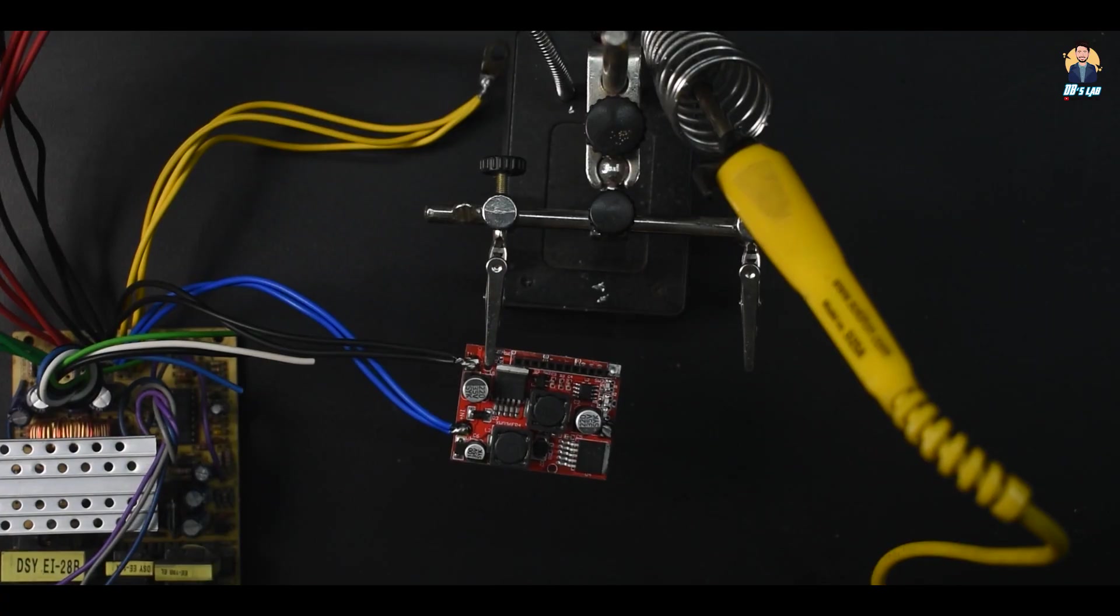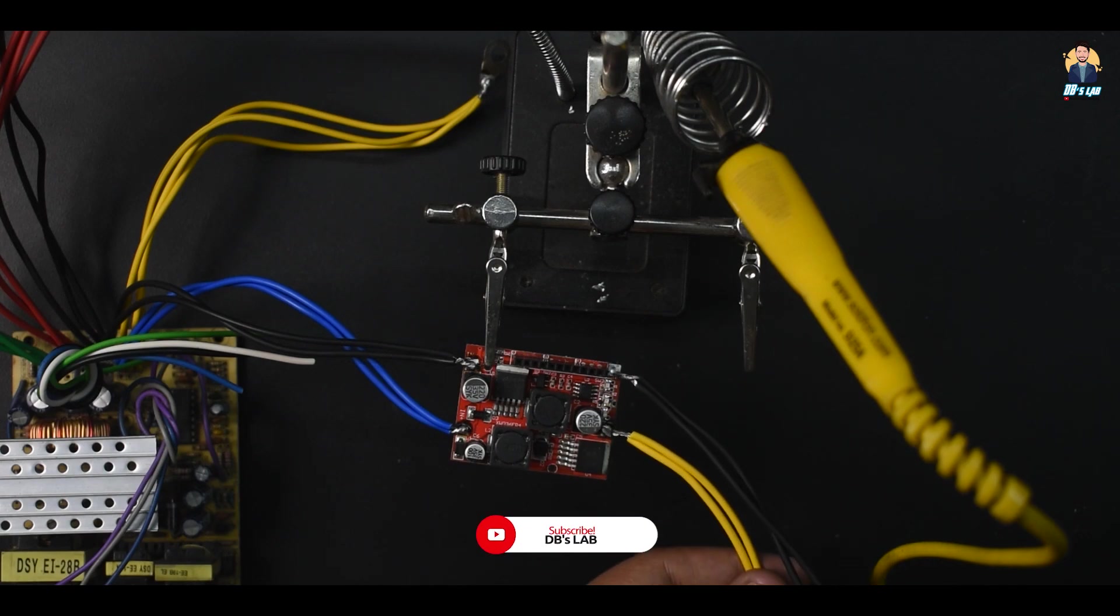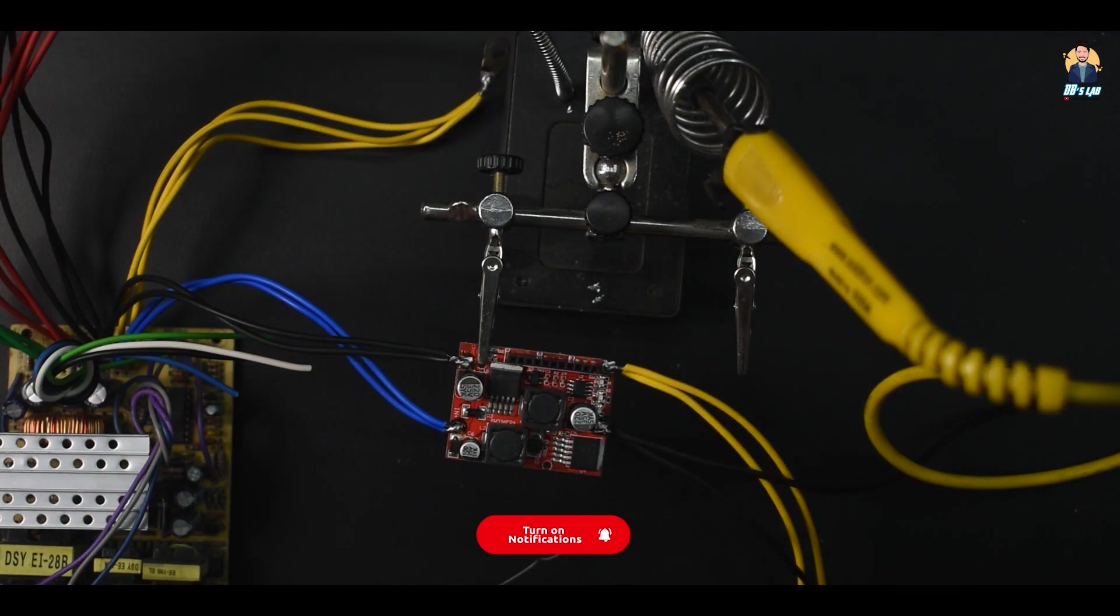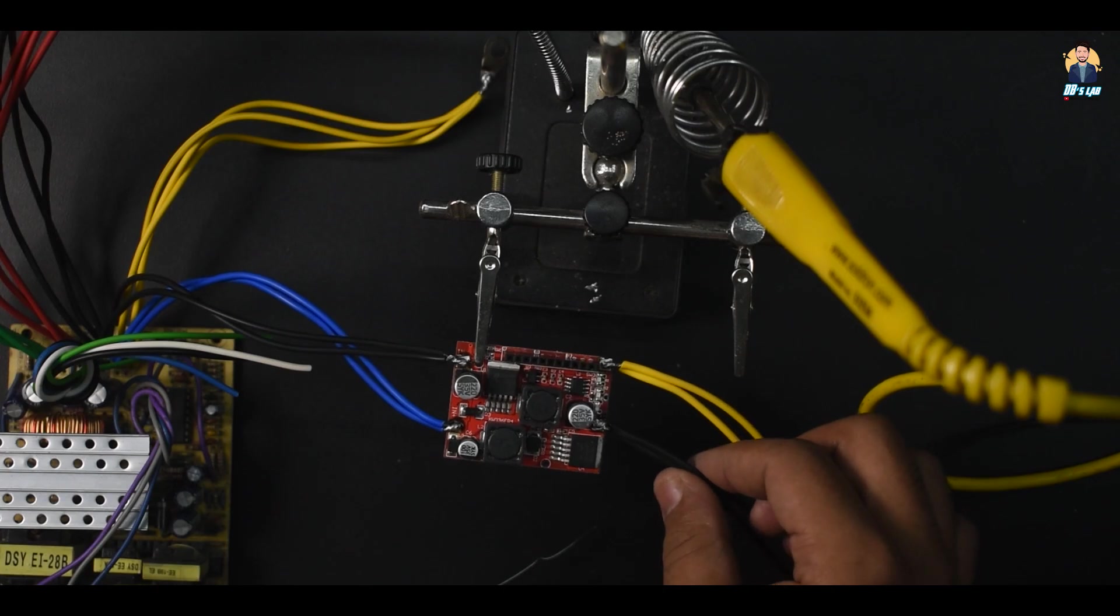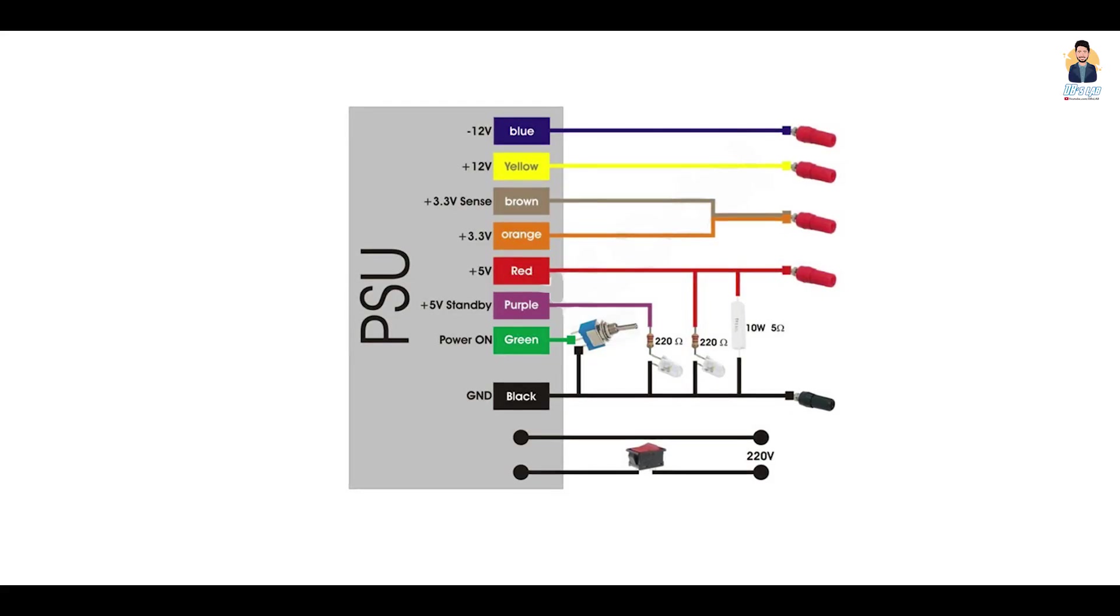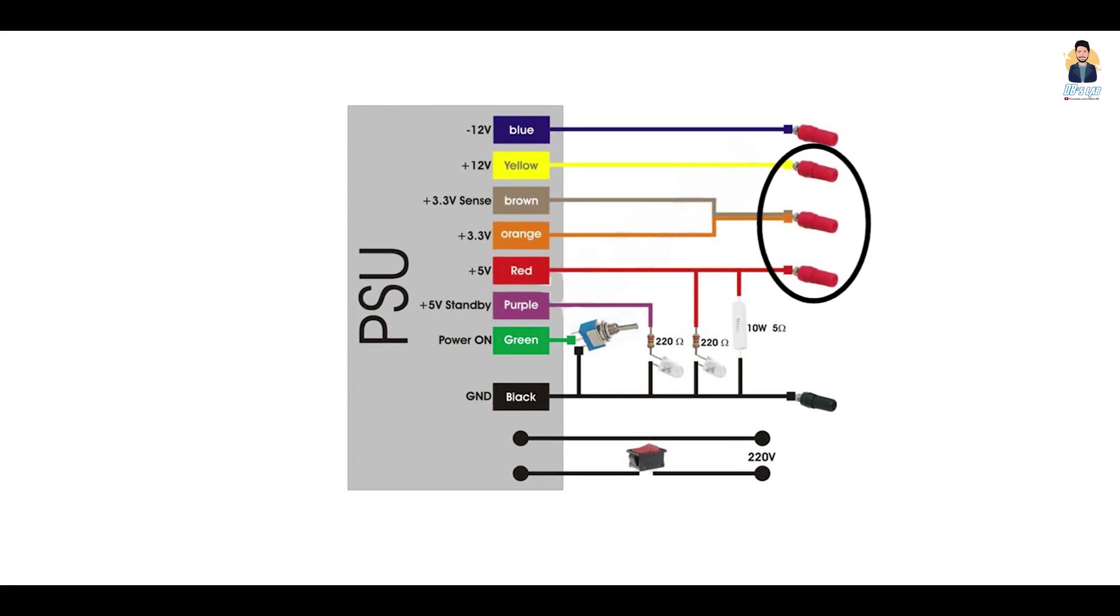I've used 12V, 5V and 3.3V only but you can also use the 5V standby and other voltages too. So as you can see from this diagram the 3 wires yellow, orange and red is connected to a binding post.